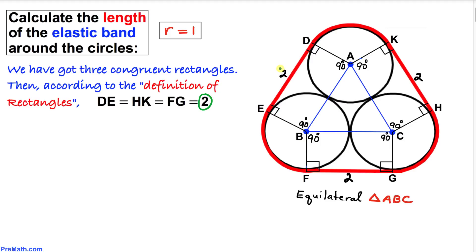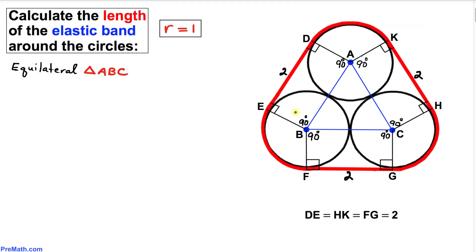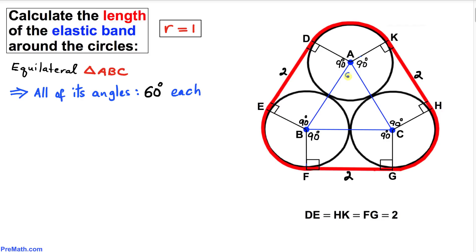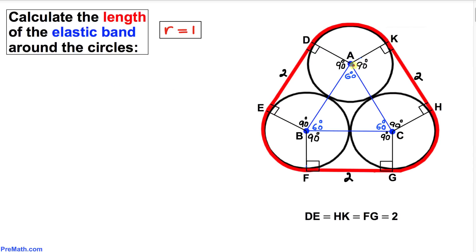Focusing on triangle ABC, since it is equilateral with each side equal to two units, all of its interior angles are 60 degrees each. So angle A is 60 degrees, angle B is 60 degrees, and angle C is 60 degrees.